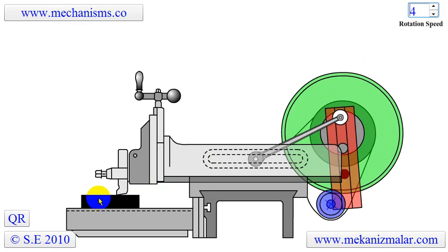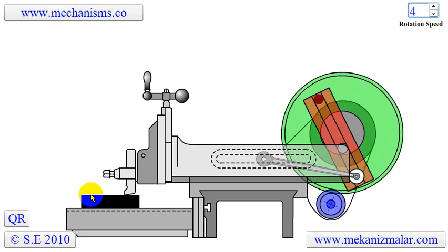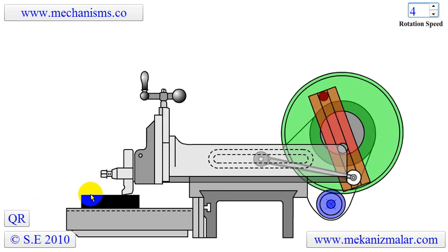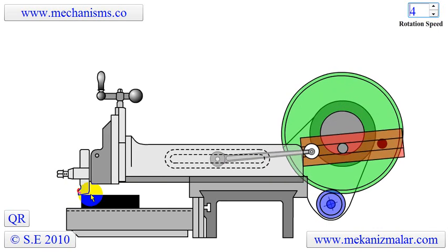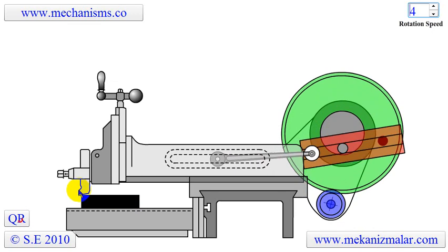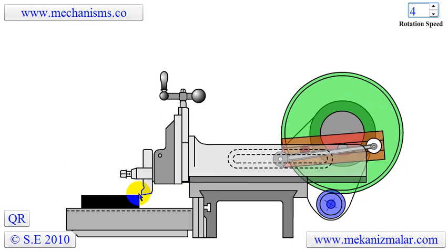On the return stroke of the ram, the tool is lifted clear of the workpiece, reducing the cutting action to one direction only. The slow forward motion of the ram is the cutting stroke, whereas the fast backward motion of the ram is the non-cutting stroke.